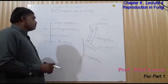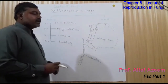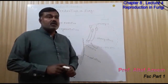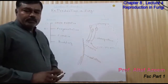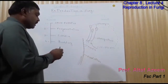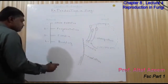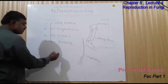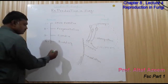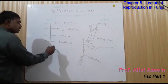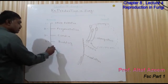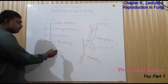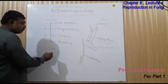The fourth process is budding. Budding is the process that occurs in some fungi like yeast. In this process, a small outgrowth forms on the body of the yeast, which is called a bud. This bud grows bigger and bigger.